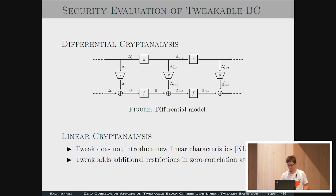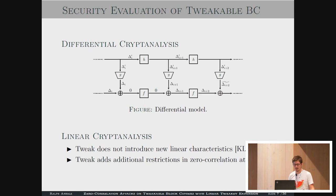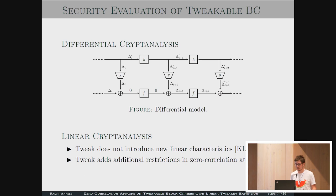When we evaluate the security of tweakable block ciphers for differential cryptanalysis, we can add a difference in the tweak and a difference in the state, and then cancel the difference in the first round if they are the same — basically getting one round for free. If we look at the same thing in linear cryptanalysis, it was shown in FSE 2017 that the tweak doesn't introduce new linear characteristics. But what was also hinted in that paper is that the tweak adds additional restrictions, which can be used in zero-correlation attacks.